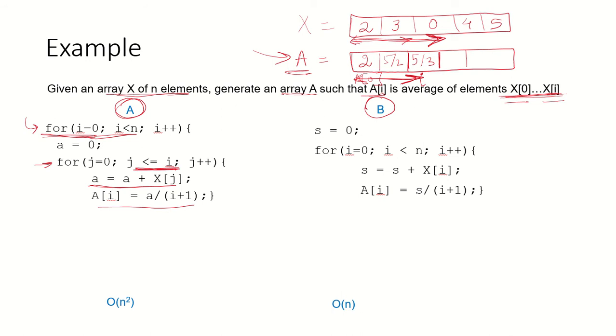You can see that there are two for loops, and when there are two for loops the complexity of this would be order of n squared.